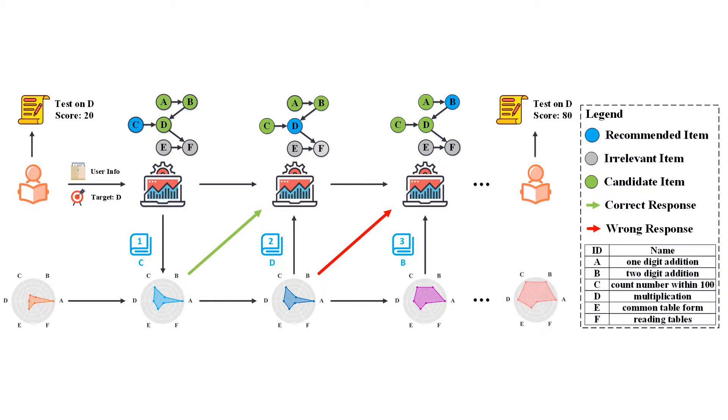For example, for the learner who wants to learn multiplication, adaptive learning recommends a learning path CDB by considering his or her current level of knowledge and the prerequisite relation of learning items.